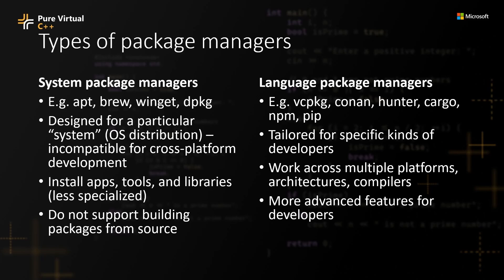There are quite a few package managers accessible to C++ developers. First, you have system package managers — utilities like apt, brew, and winget. System package managers often have a selection of pre-built libraries you can use, along with all the system utilities and applications you can additionally install. The problem is, they're really designed for their particular flavor of operating system. If you need to build for multiple platforms, you need multiple system package managers. And the pre-built libraries available may not come in all the flavors you need and may not be up to date. Ultimately, system package managers are designed around downloading assets that do not require further compilation or modification.